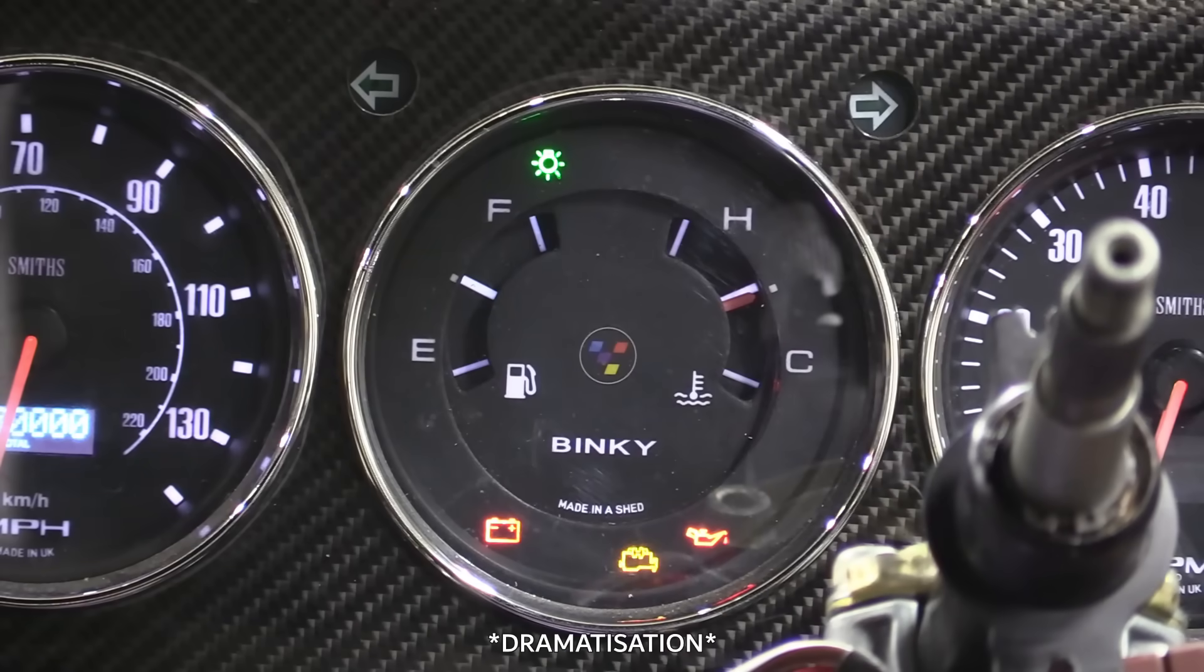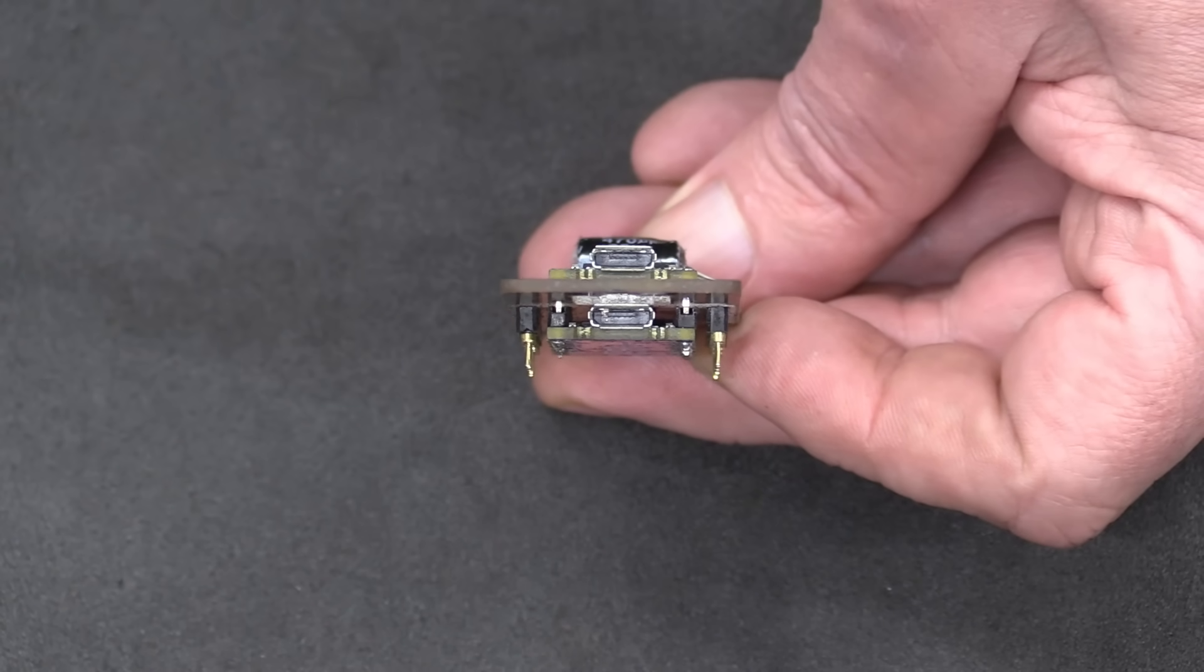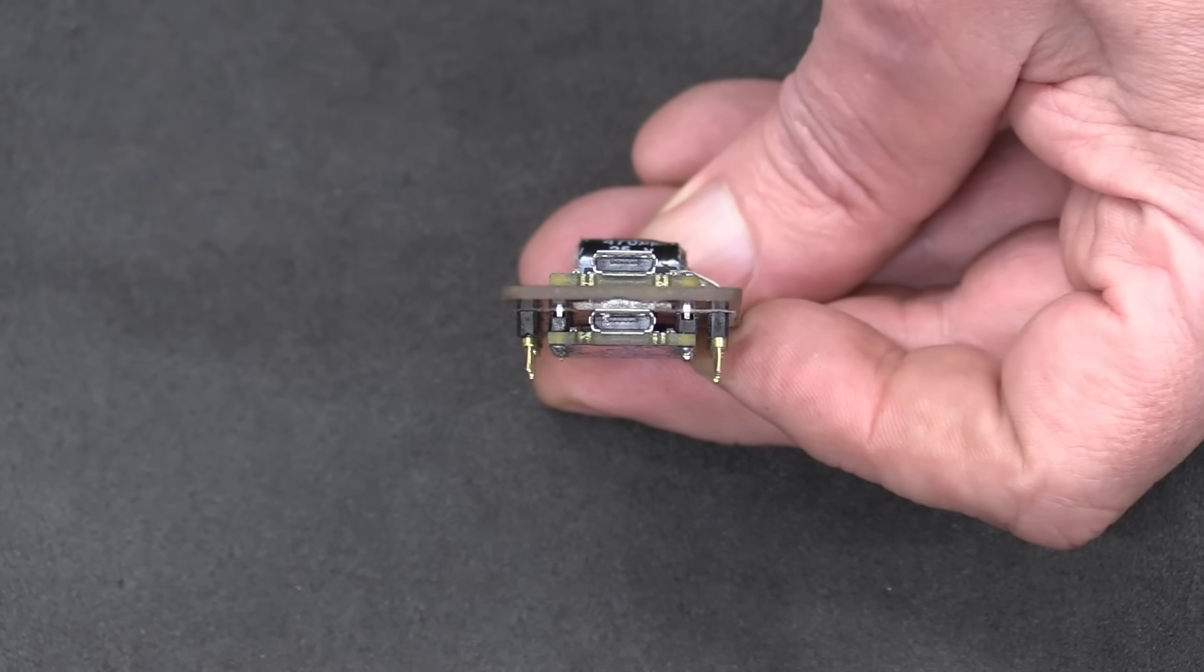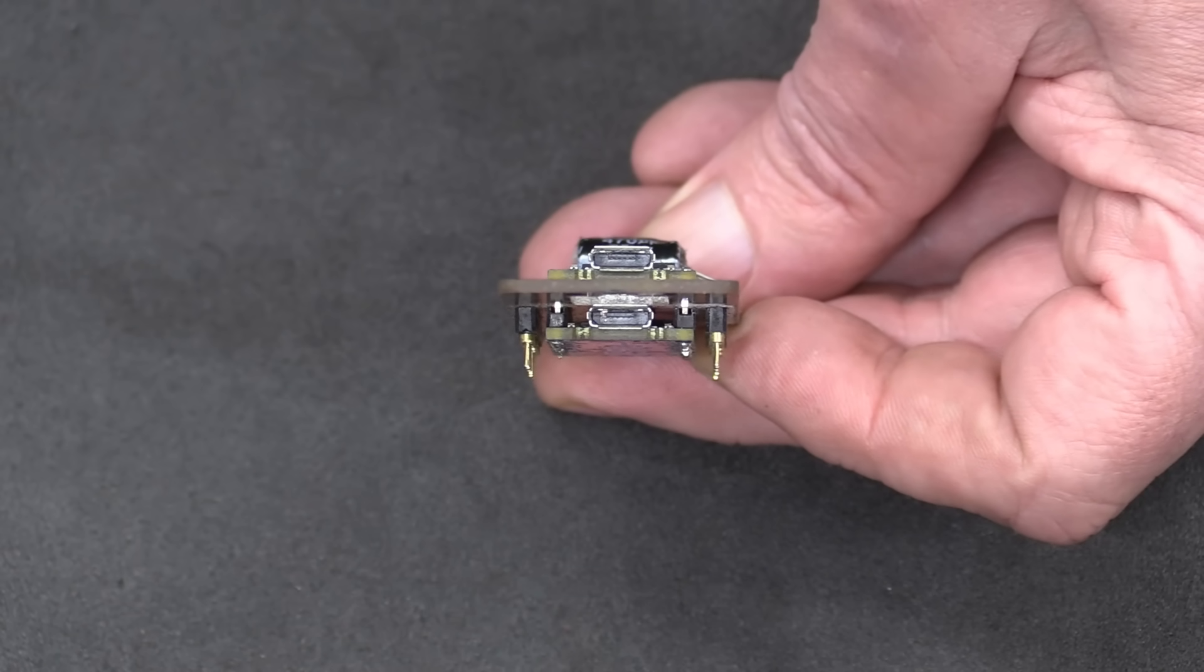A problem we encountered that took some sorting out was this. The servos would glitch like mad when the lights were on. After much gnashing of teeth, I decided in the end to split the functions over two stacked Arduinos, one for the servos and one for the lights.